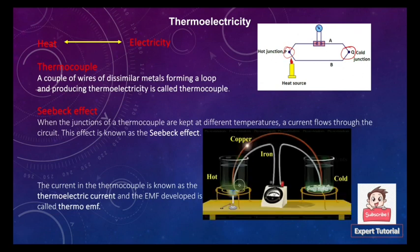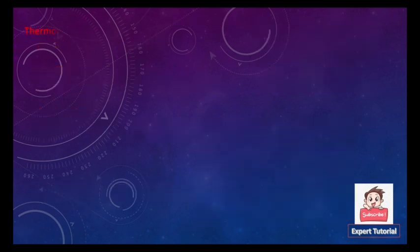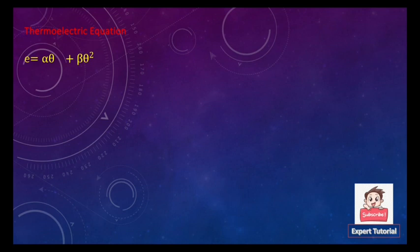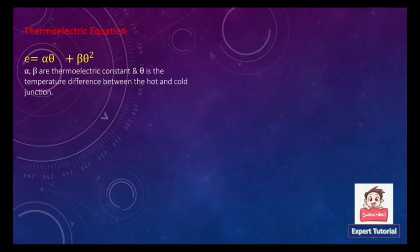Coming to the next topic: the thermoelectric equation. This equation gives the thermo EMF: E equals alpha·θ plus beta·θ², where alpha and beta are thermoelectric constants and θ is the temperature difference between the hot and the cold junction.